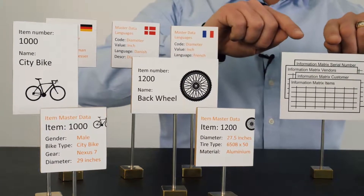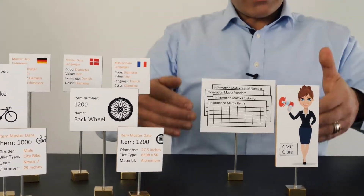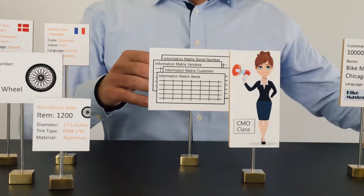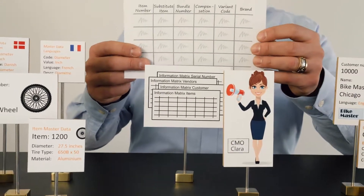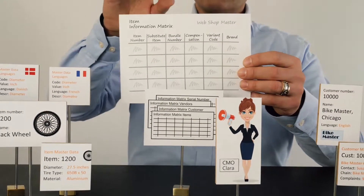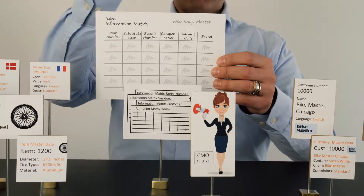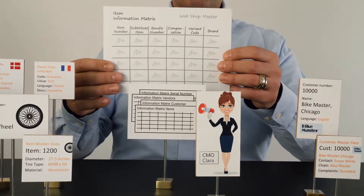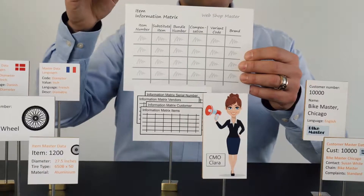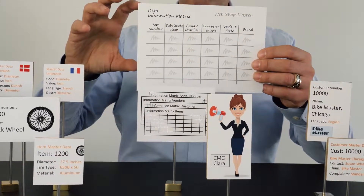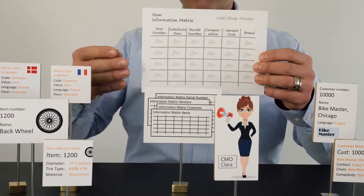If I view this in my information matrix, where I can work with many items and many lines at one time, I could add parameters on the item — for instance, how I want to bundle my item, what my variant code is, my brand, or even my color and so on. With this functionality, it's possible to make groups of items that I can import and work with.